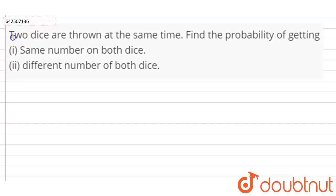So the question is, two dice are thrown at the same time. Find the probability of getting the same number on both dice and the second part is different number on both dice.